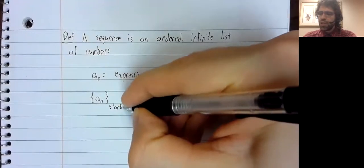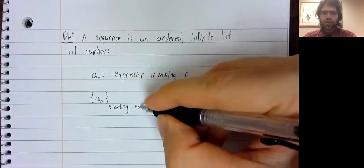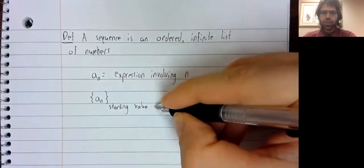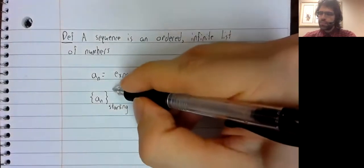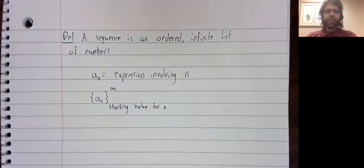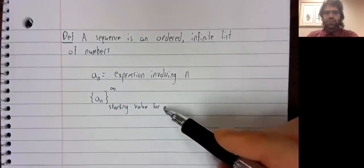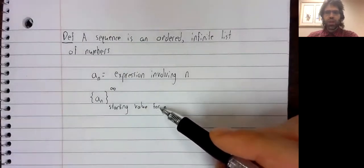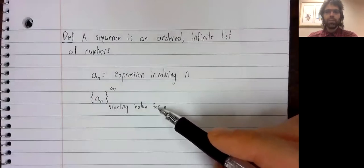Down here, we'll put a starting value for n. Up here, we'll put an infinity symbol. And this tells us where to start our sequence, and then we just count up from this.